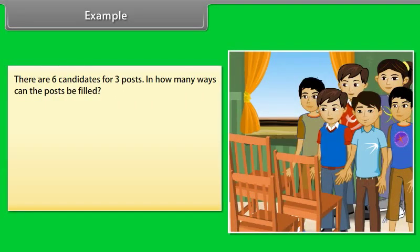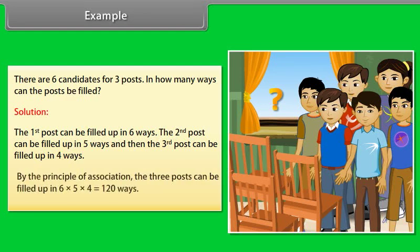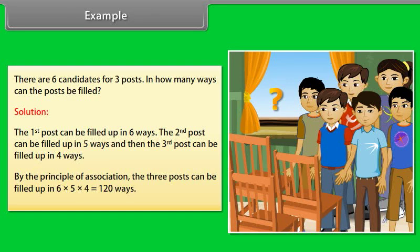Example: There are six candidates for three posts. In how many ways can the posts be filled? Solution: The first post can be filled in six ways, the second post in five ways, and the third post in four ways. By the principle of counting, the three posts can be filled in six into five into four, which is equal to 120 ways.